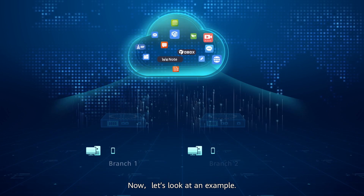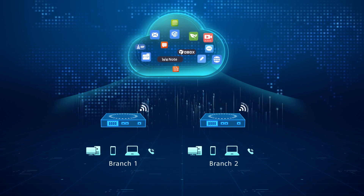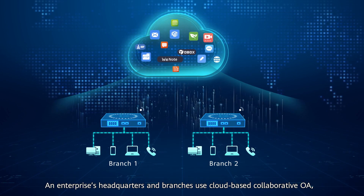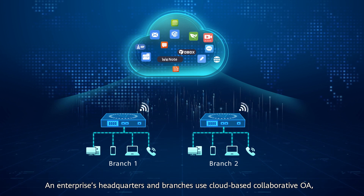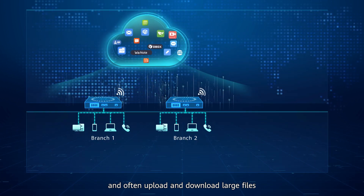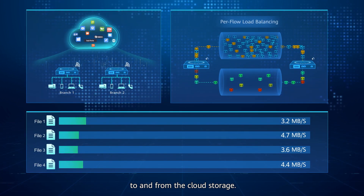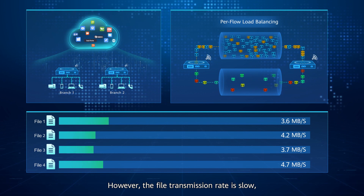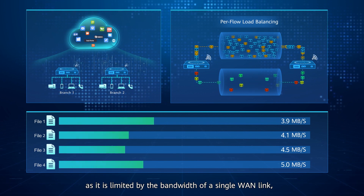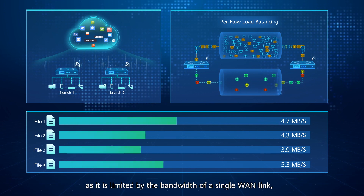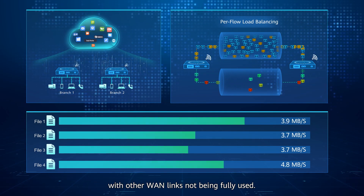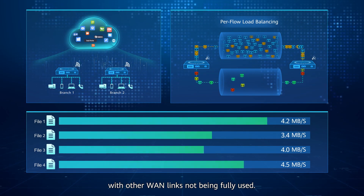Now, let's look at an example. An enterprise's headquarters and branches use cloud-based collaborative OA and often upload and download large files to and from the cloud storage. However, the file transmission rate is slow, as it is limited by the bandwidth of a single WAN link, with other WAN links not being fully used.